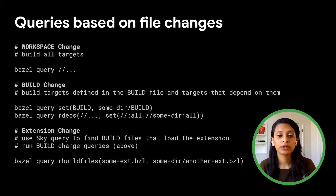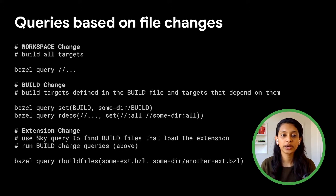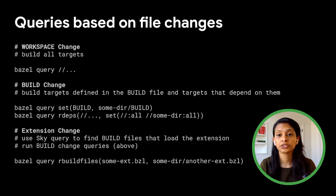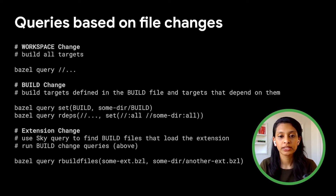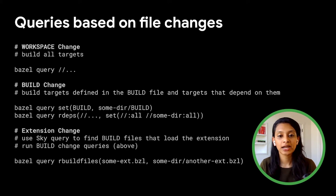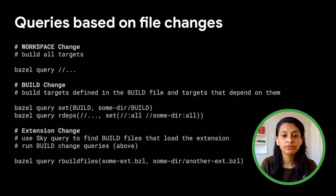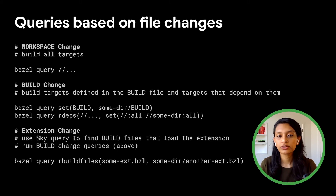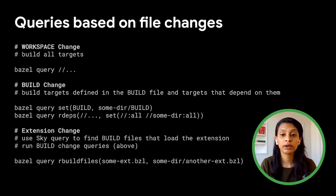We then take the first part of the build label returned and suffix it with a colon-all to get all targets defined within that build file. We also use the rdeps query function, which returns the reverse dependencies of those targets. These two queries form the basis we reuse for the next two change types as well. For extension changes, we need to know what build files are loading the extension files to get the scope of impact. We use a sky query — which is like a Bazel query but with extra flags — to find all build files loading that extension. Once we have that list of build files, we run the same build change queries to know what targets are in them and which targets depend on them.